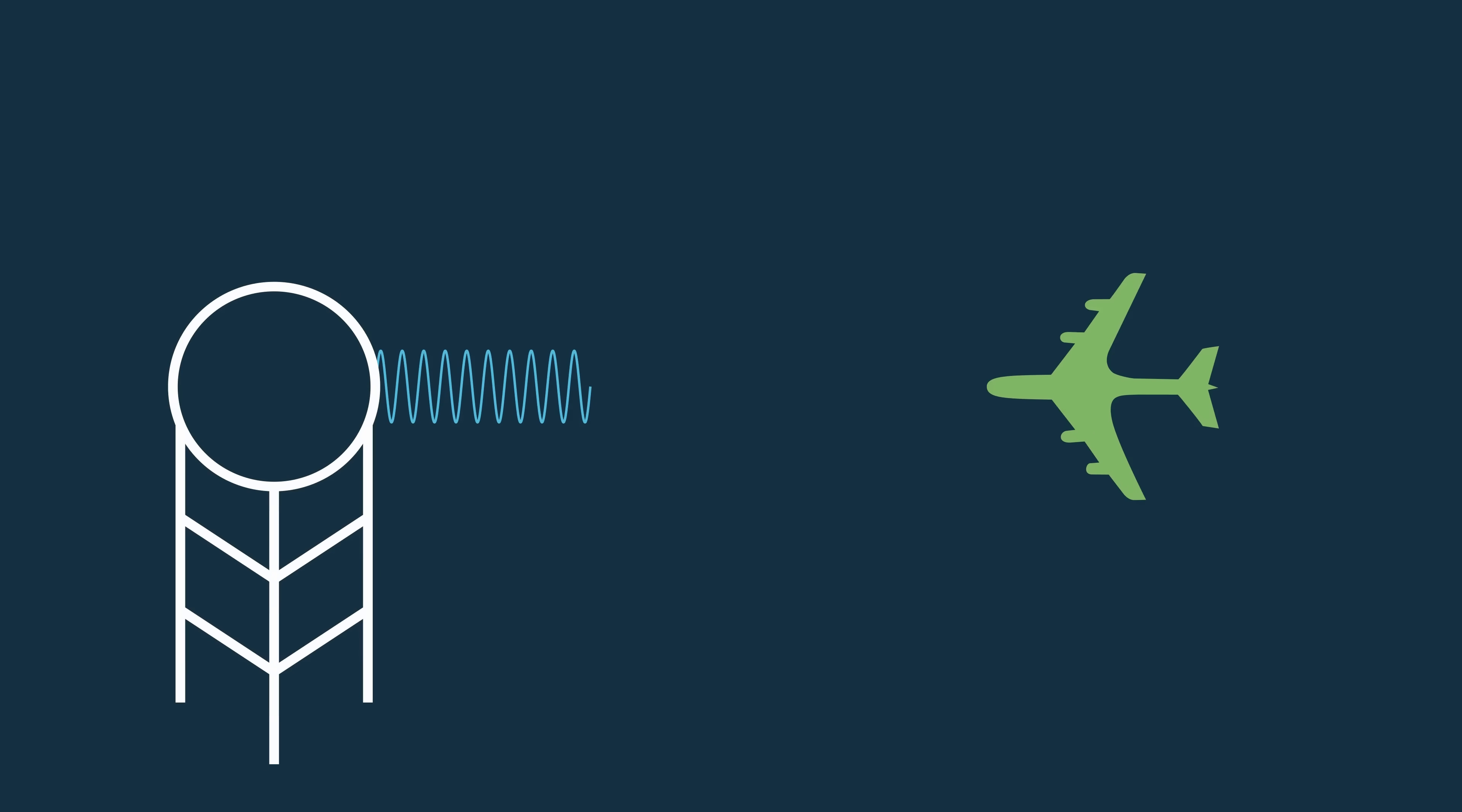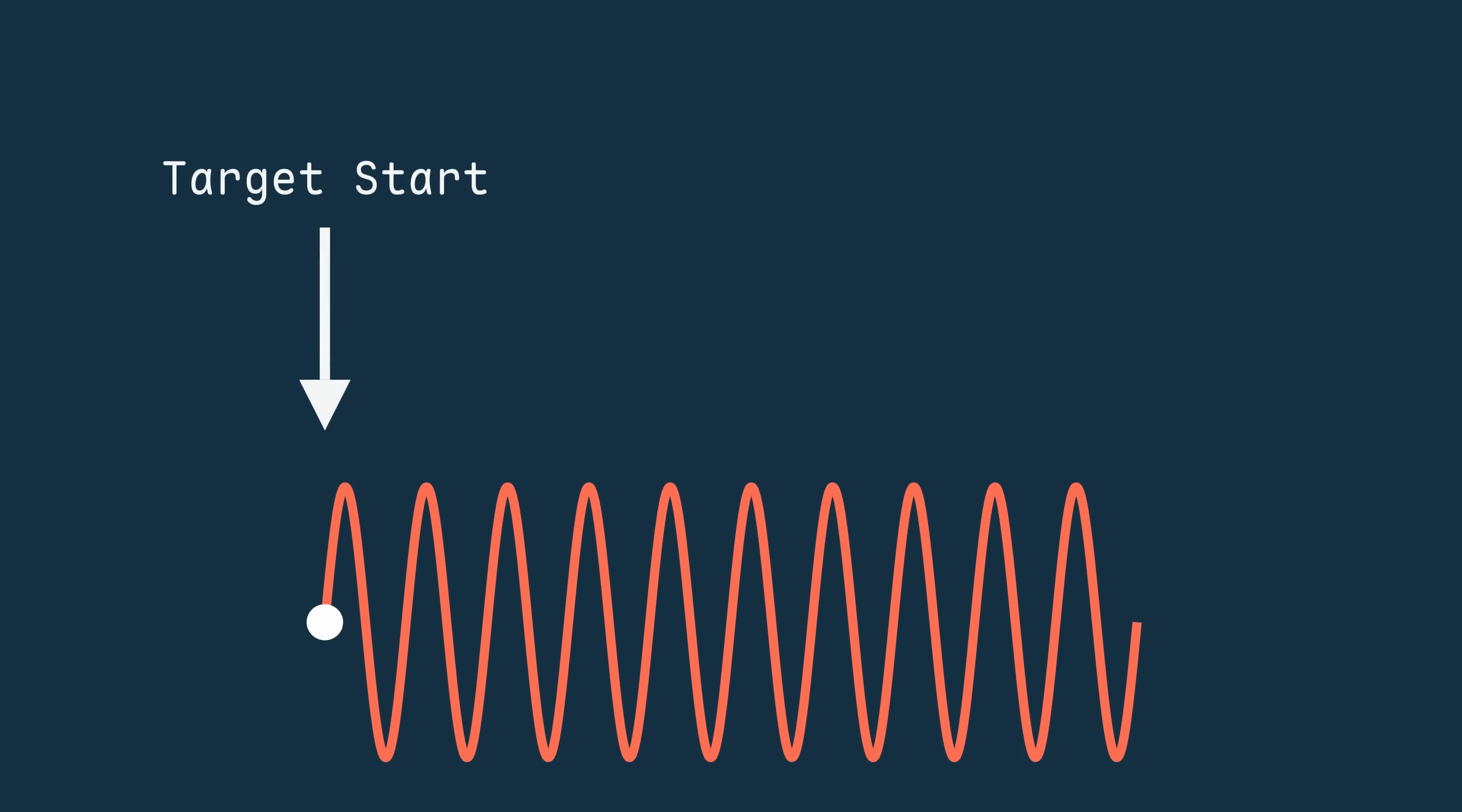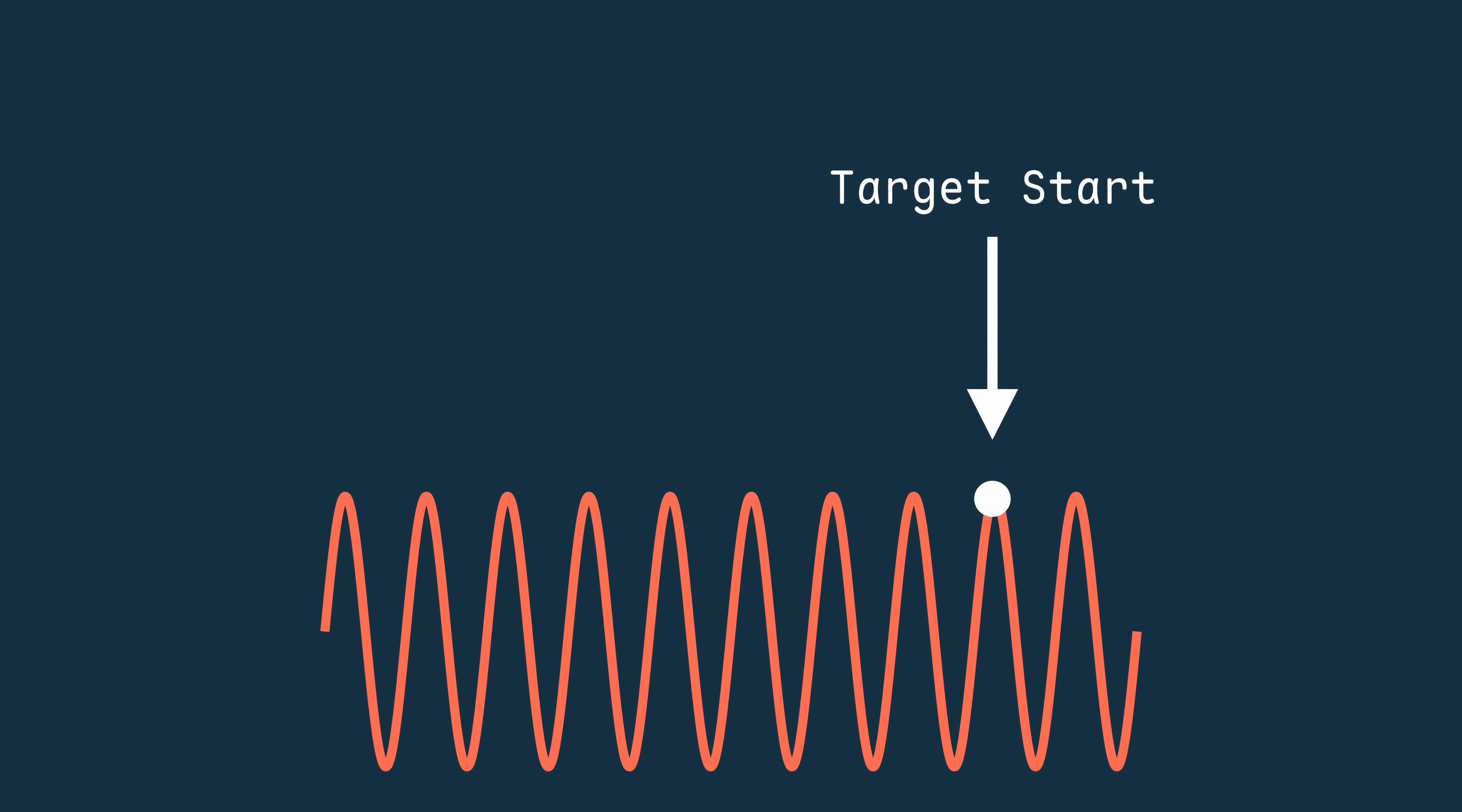So here's our signal. A relatively long pulse at a single frequency. Currently, if we transmit this, it'll scatter off a target and return the same width, which means the target's range could correspond to any range within this pulse width. But it really only exists at one of these ranges.